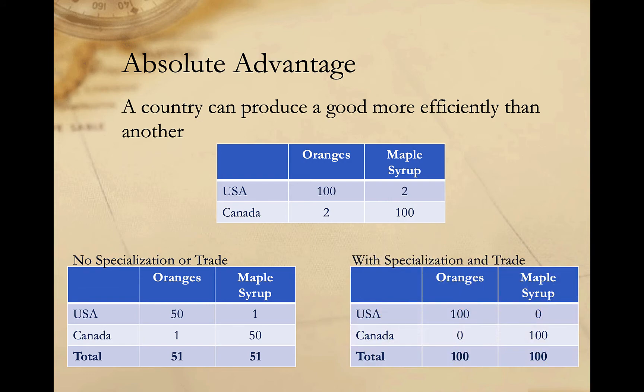But if each country were to specialize and produce what they have an absolute advantage in and then trade, global production would increase. Canada would produce 100 syrups but no oranges, while the United States would produce 100 oranges but no syrup. If they traded at a one-to-one ratio, each country would then be able to consume 50 of each good after trading.